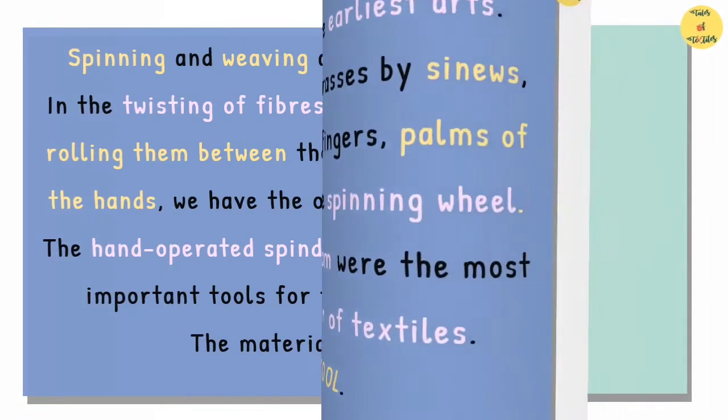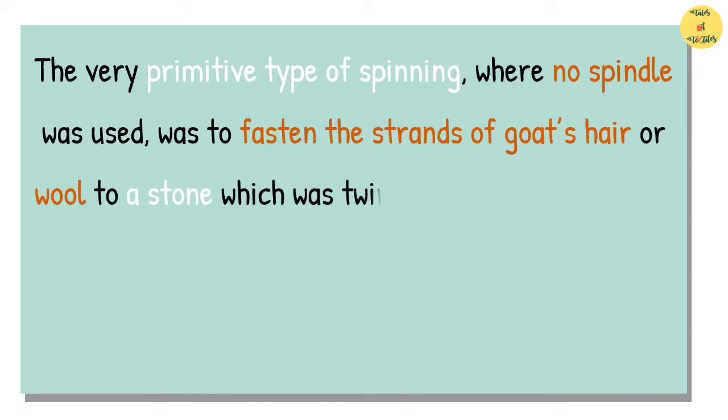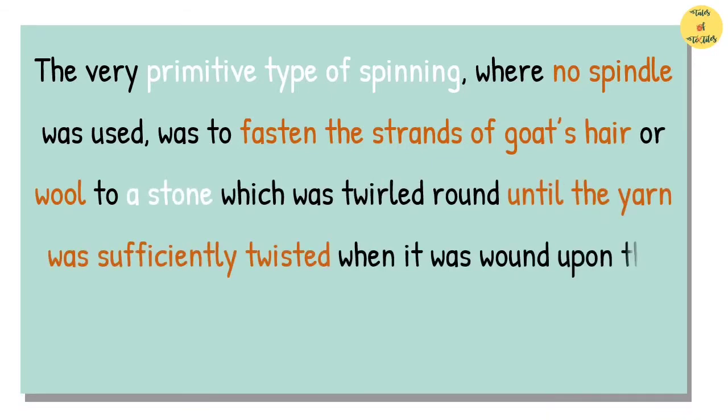The material used was wool. The very primitive type of spinning, where no spindle was used, was to fasten the strands of goat's hair or wool to a stone which was twirled round until the yarn was sufficiently twisted when it was wound upon the stone and the process repeated over and over.